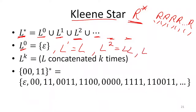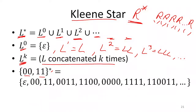L squared equals L concatenated with L. L to the power three is L, L, L, and so forth. So for L to the power k, that means k L's in a row concatenated. For instance, if I had the language {00, 11} starred — the Kleene star of the language {00, 11} — this will give me any string that is pairs of zeros and ones in any order.